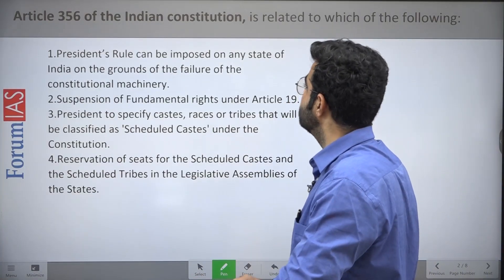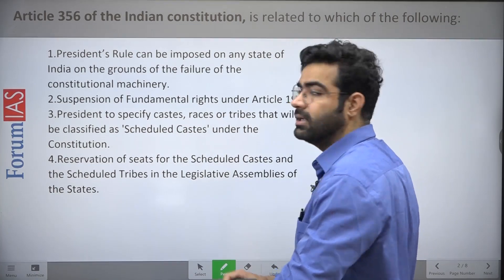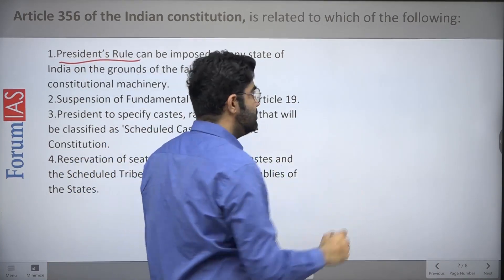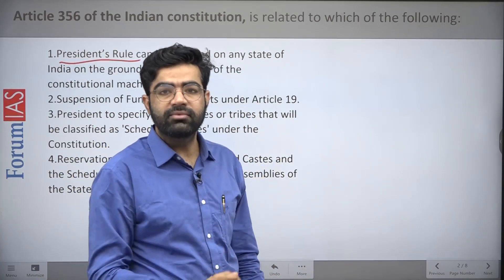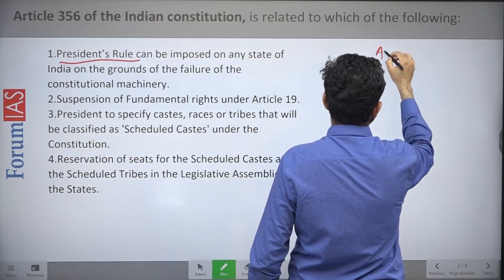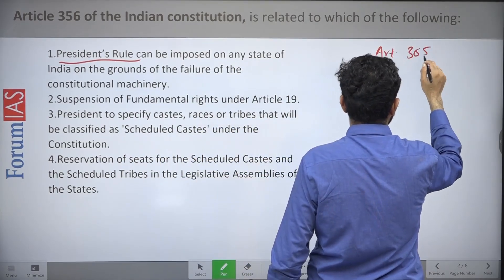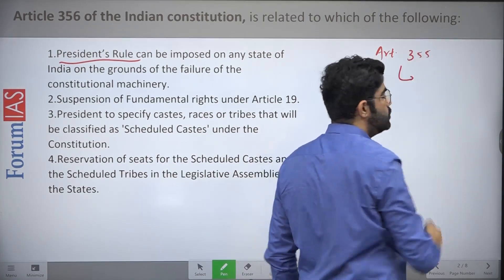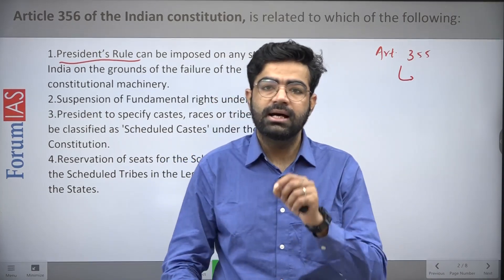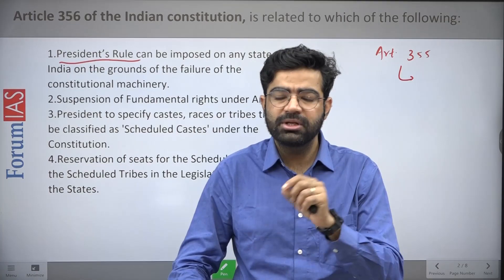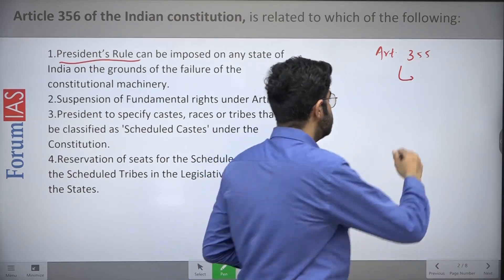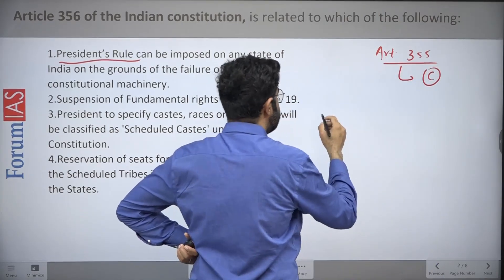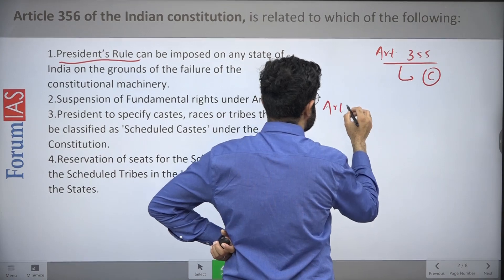Question number one: Article 356 of the Indian Constitution is related to which of the following? It's a simple question related to the President's Rule. You should know about three articles especially — Article 355 says it is the duty of the Centre to ensure that states are running their administration according to the Constitution.